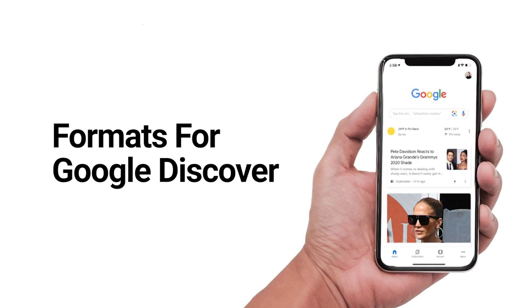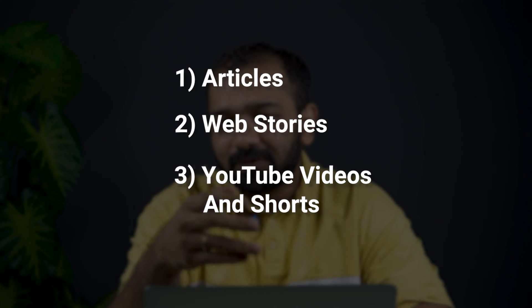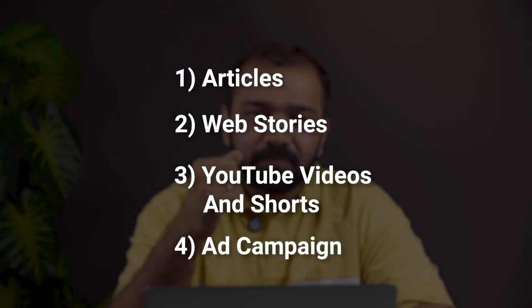Before we move on to optimizing for Google Discover, it's important to know what kind of formats work for it. There are four formats that work on Google Discover: articles, web stories, YouTube videos and shorts, and ad campaigns. As a publisher, if you experiment with all these different formats, you're increasing your chances of appearing on Google Discover.